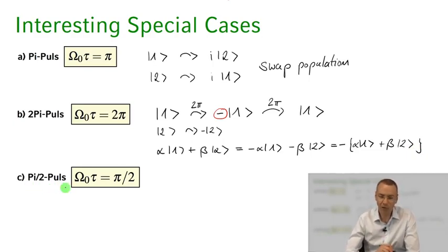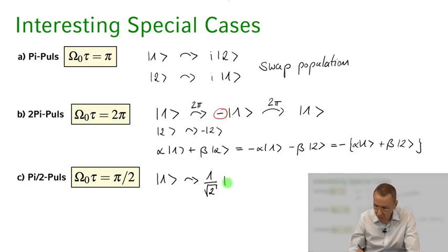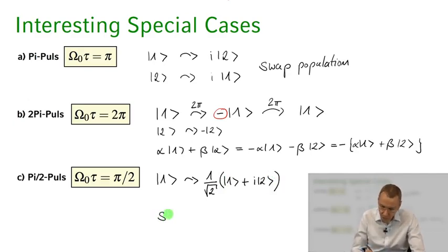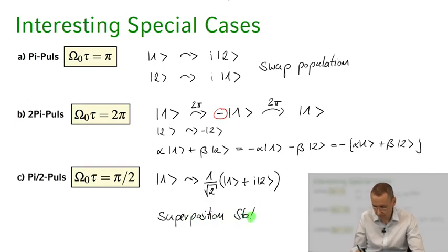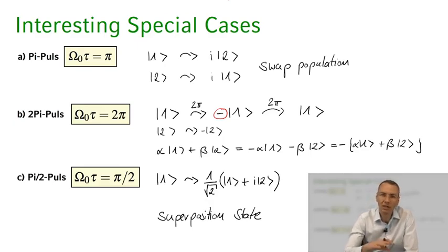Finally, the π/2 pulse: when ω₀τ = π/2 and we start in the ground state, after this π/2 pulse we find the state is (1/√2)(|1⟩ + i|2⟩) — a coherent superposition of the ground and excited state. So to summarize the special cases: with a π pulse we swap populations; with a π/2 pulse we bring the system into a superposition of |1⟩ and |2⟩; and with a 2π pulse we flip the sign of the state from plus to minus. These are things to remember as we go through the course.